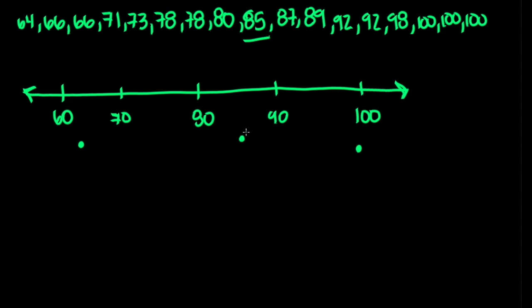Our third dot, the median, is at 85. Now to find the first quartile, we take all of the lower range of numbers — from 64 all the way to 85 including the median — and find the median of that range. With nine scores including the median in the lower half, the first quartile is the fifth score counting from the low end. Counting five numbers in, the fifth number is 73, so 73 is our first quartile.